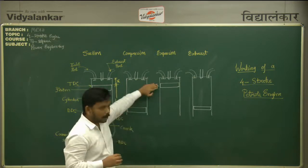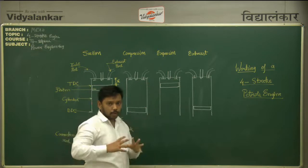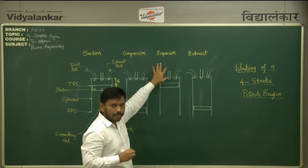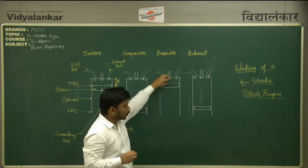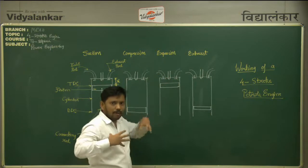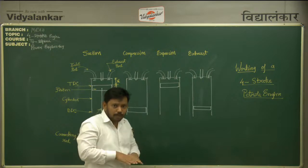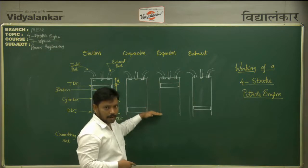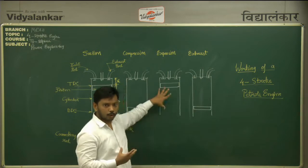As soon as we reach the top dead center, we start the expansion stroke. The expansion stroke is started by igniting the spark with the help of the spark plug. During this stroke, both the inlet valve and the exhaust valve are completely closed. Because of the explosion — or rather combustion — a high amount of heat energy is created and hot gases are generated. These hot gases push the piston in the downward direction, moving it from the top dead center to the bottom dead center, and this way useful power is generated. This was the expansion stroke.